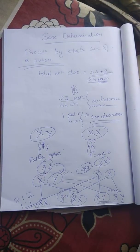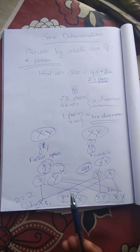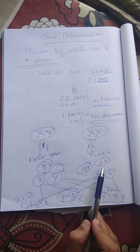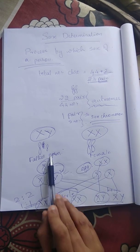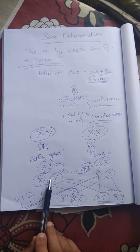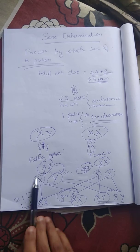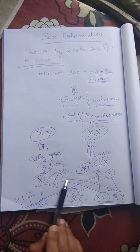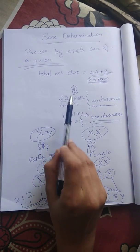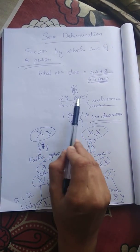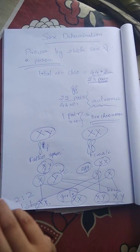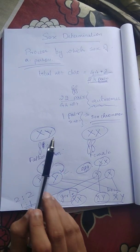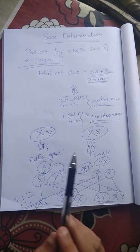How is the sex of the child determined? Prove that the father determines the sex of the child. Females have only X chromosomes. Males have both X and Y in their sperm. Total number of chromosomes are 22 pairs plus one pair of sex chromosomes.